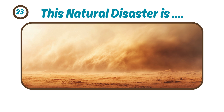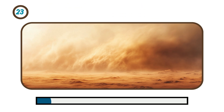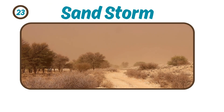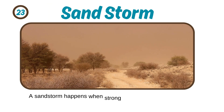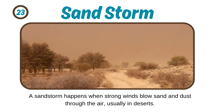This natural disaster is... This is a sandstorm. A sandstorm happens when strong winds blow sand and dust through the air, usually in deserts.